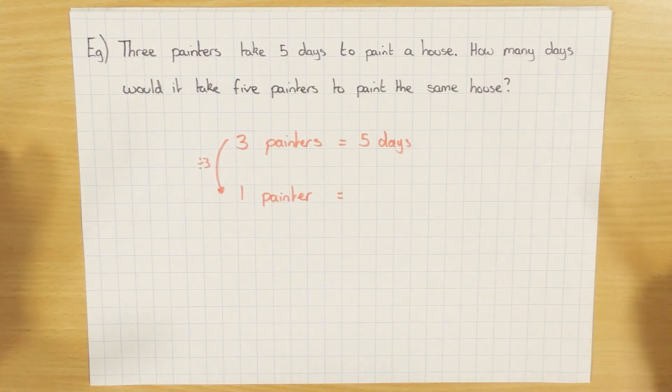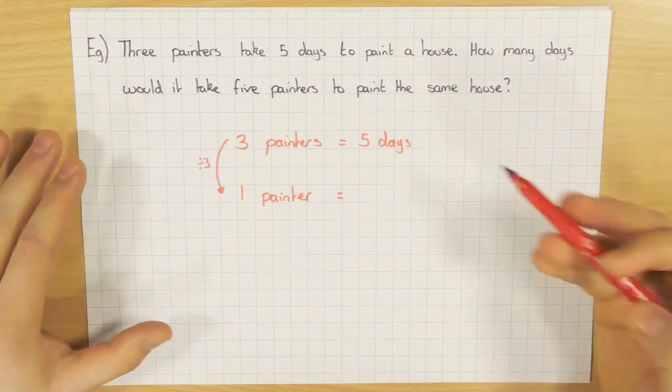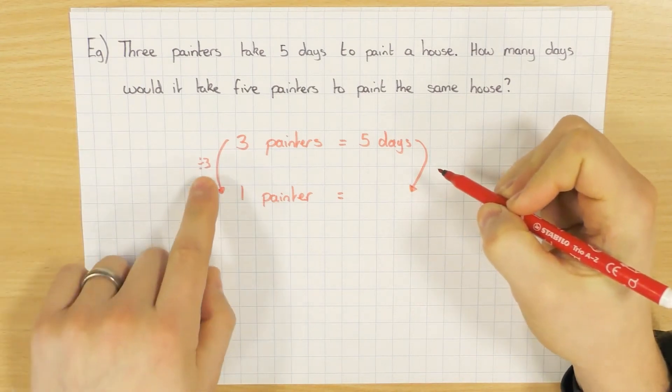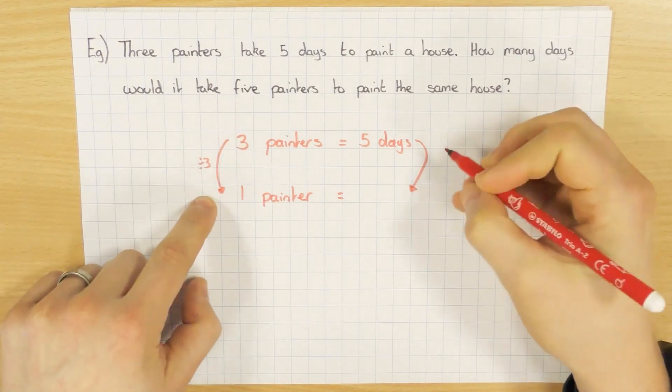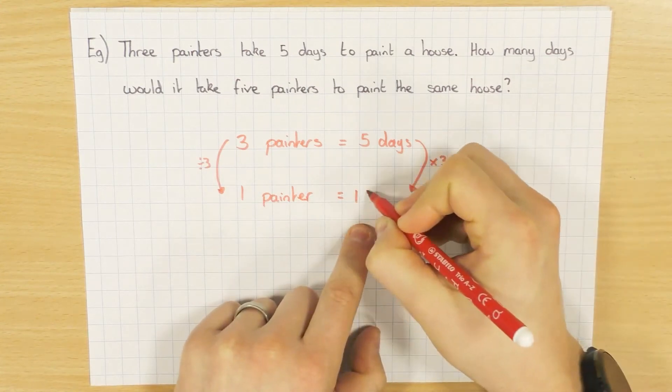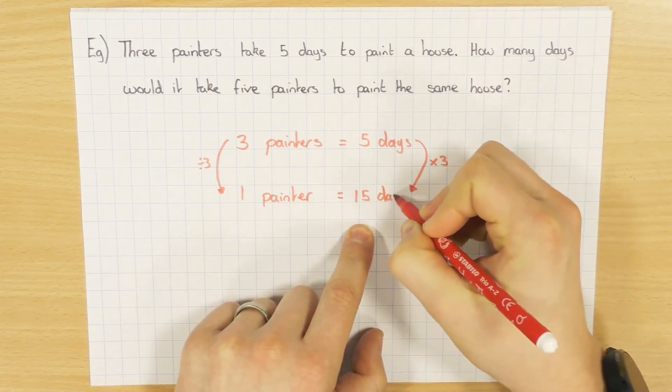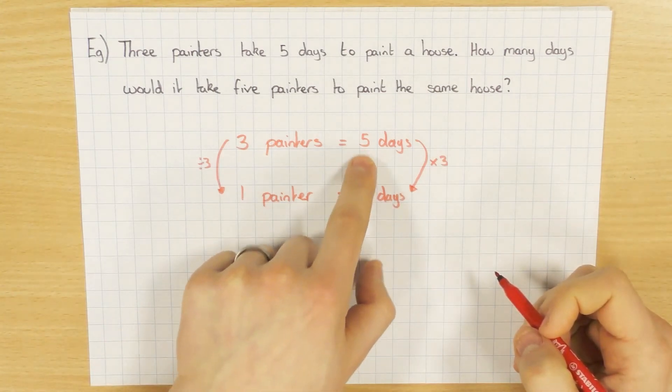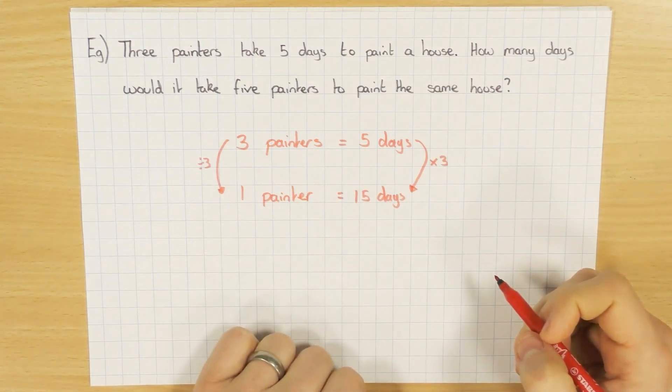Three guys can do it in five days. One guy is going to take a lot longer. But if we're doing it with proportion, we can actually work it out. So if I divide this by three, I do the opposite over here and I times by three, which gives me 15 days. So one painter will take three times as long, so 15 days. So hopefully that makes a little bit of common sense.